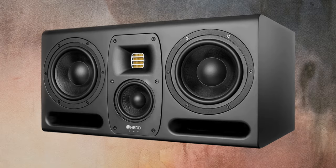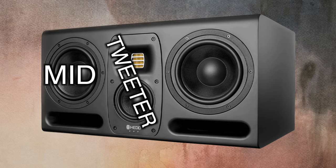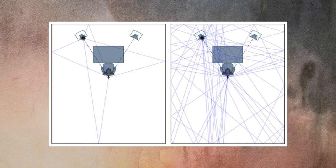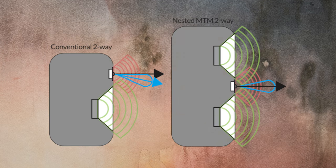MTM studio monitors, otherwise known as mid-tweeter-mid design. This is great for creating a greater sweet spot without increasing reflection points and phase issues within your room. It creates a better dispersion pattern with the tweeter being in the center of the two woofers, which allows you to spread the monitors wider without having to worry about any additional phase issues.